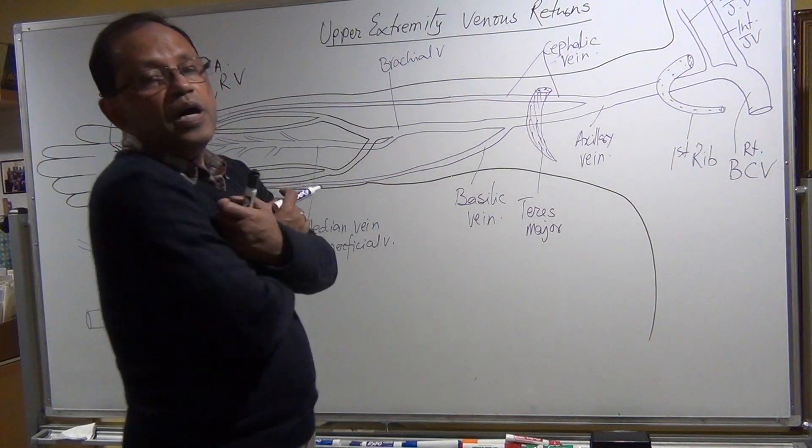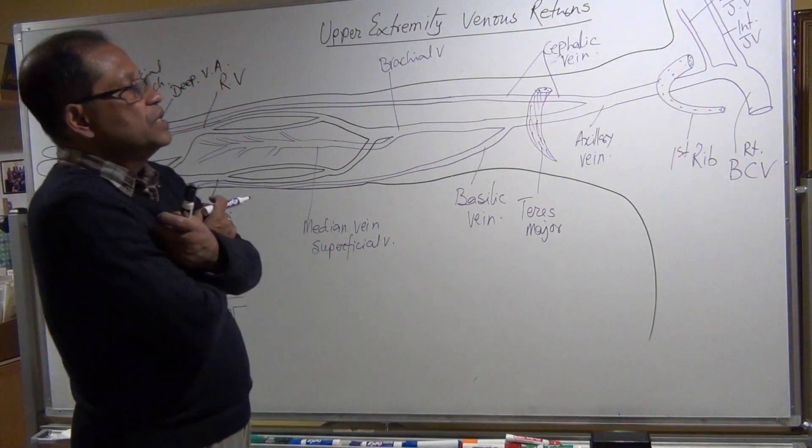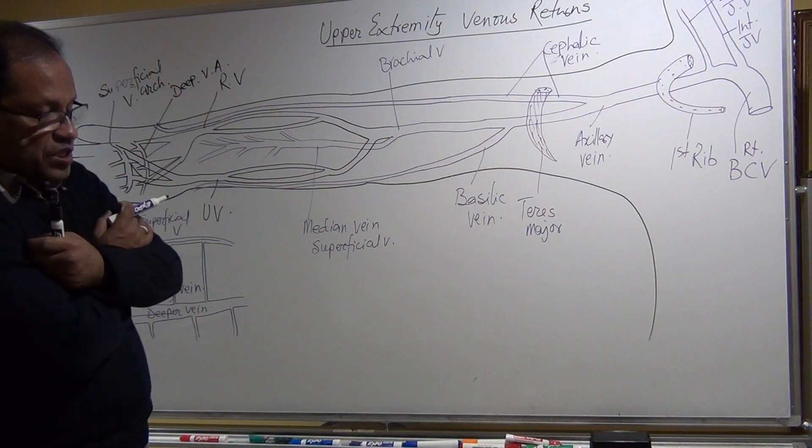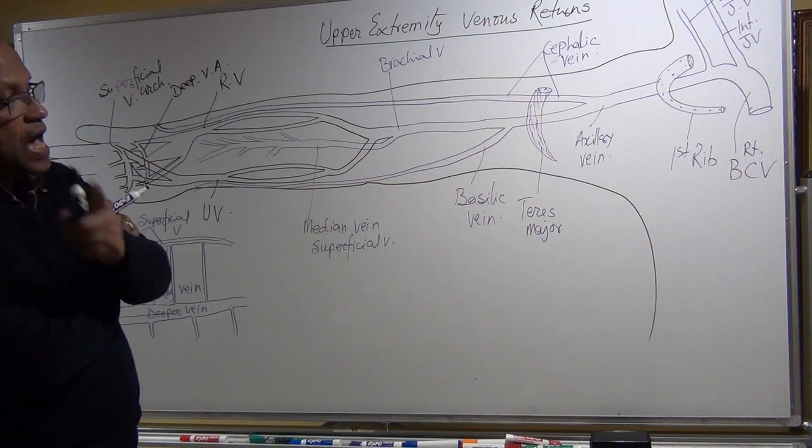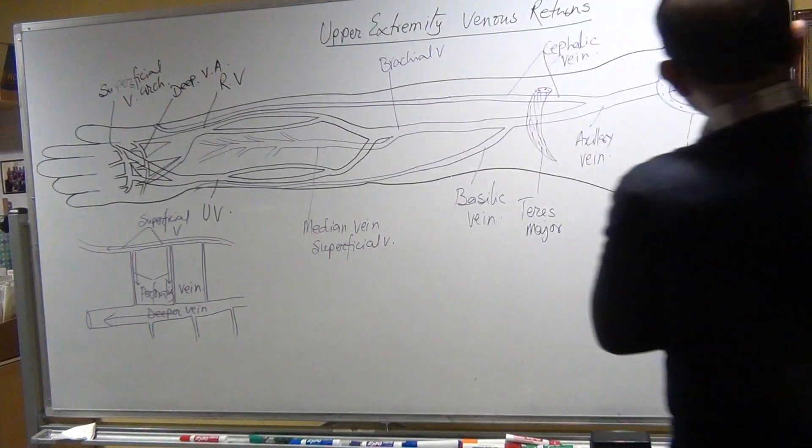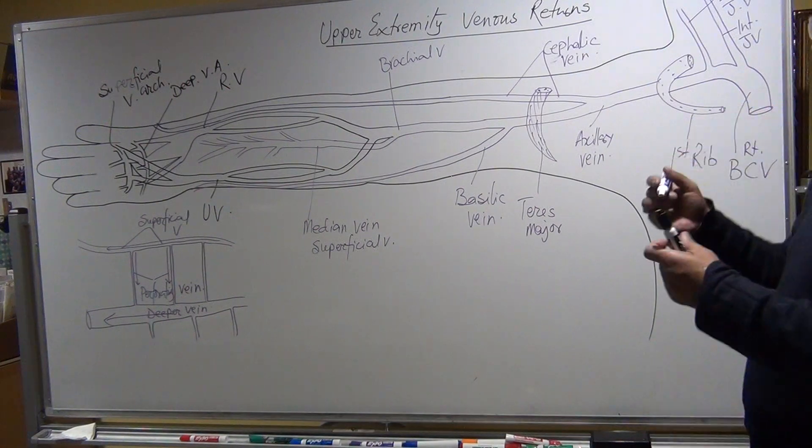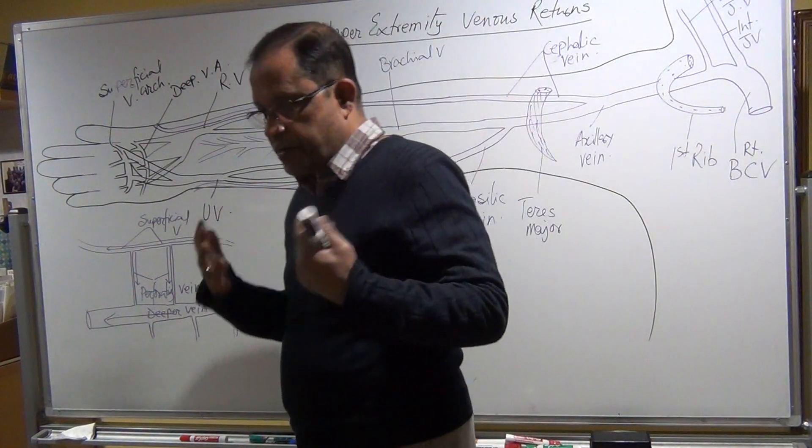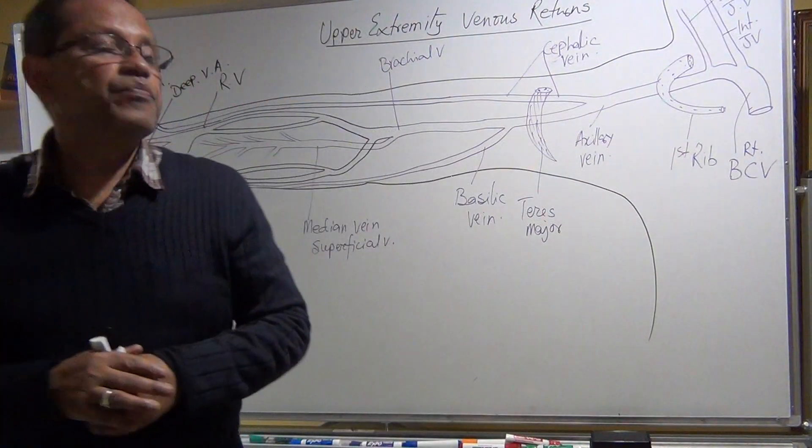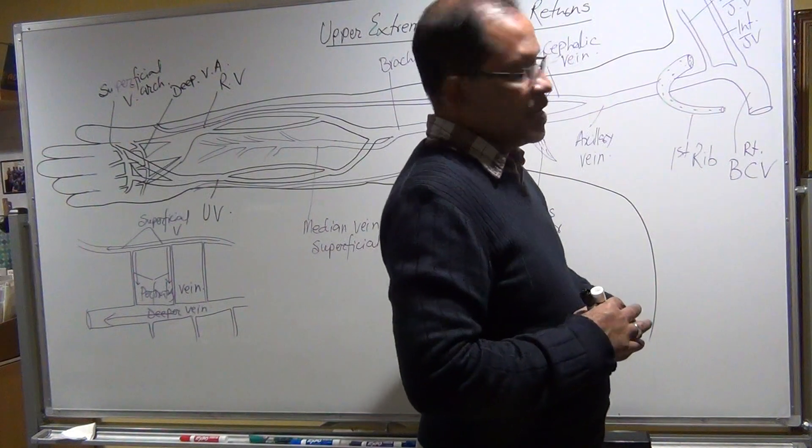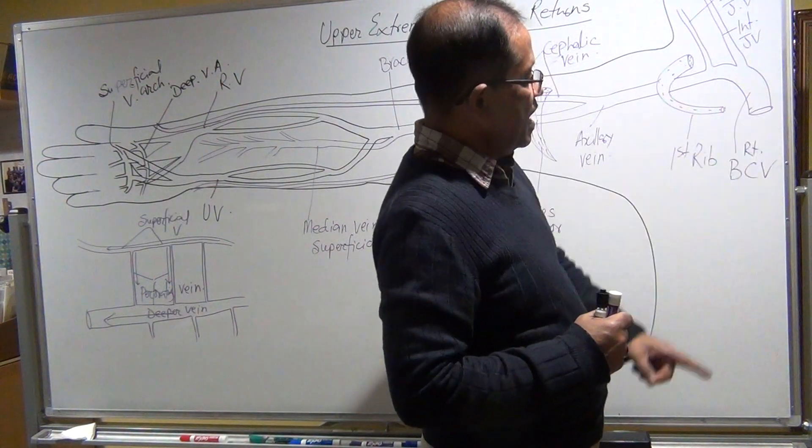I hope you understood the upper extremity venous drainage. The last thing you need to understand is if the patient has congestive heart failure, that means the right atrial pressure goes up. When the right atrial pressure goes up, then superior vena cava, inferior vena cava...